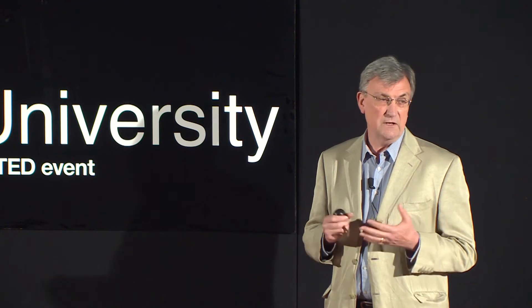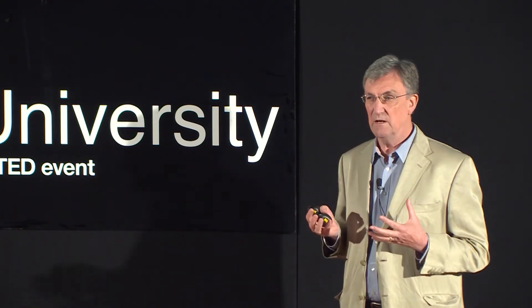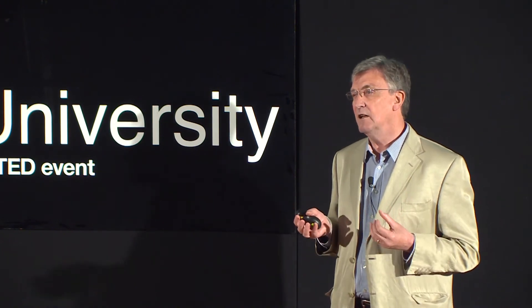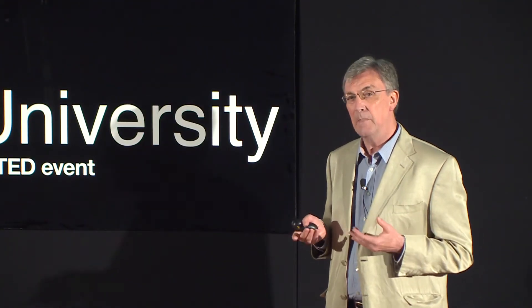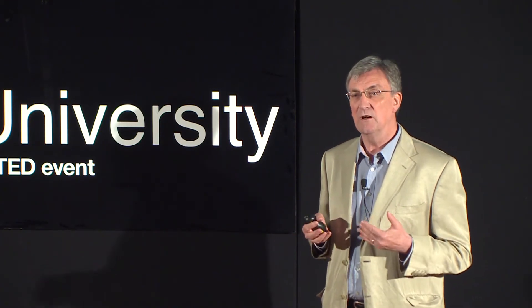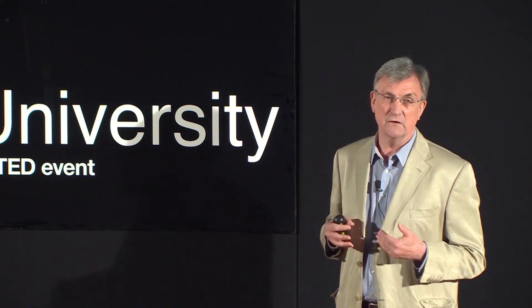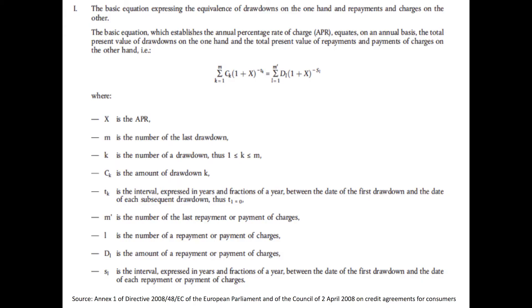The actual legislation is much more complicated — it's not just put into words. It's extraordinary legislation: the only legislation I know that incorporates a mathematical equation, and all such legislation does this. The greater part of most of this legislation consists of the equation itself and an explanation of it. This comes from the EU Consumer Credit Directive, and you can see it's quite forbidding — so let's simplify it a little.